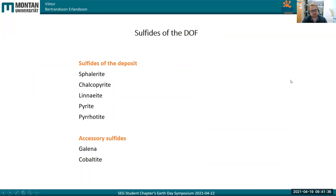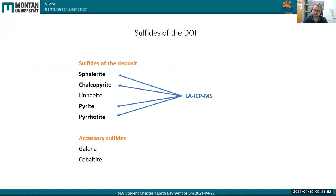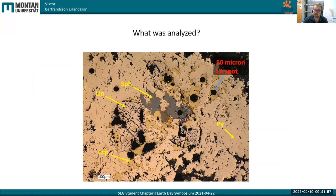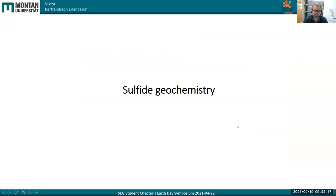The sulfides we have in this mineralization are sphalerite, chalcopyrite, pyrite, linneite — which is the major cobalt sulfide — pyrite and pyrrhotite, and then some accessory galena and cobaltite. Sphalerite, chalcopyrite, pyrite, and pyrrhotite are the ones I've been focusing on with laser ablation ICP-MS. This is basically what it looks like — here we see one of these cluster mineralization styles, where linneite is surrounded in a matrix of pyrite with some interstitially grown chalcopyrite and sphalerite, and the beautiful round craters from the laser ablation ICP-MS.